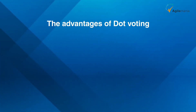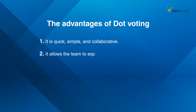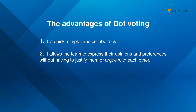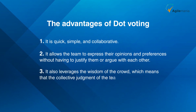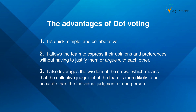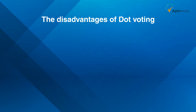The advantages of dot voting are that it is quick, simple, and collaborative. It allows the team to express their opinions and preferences without having to justify them or argue with each other. It also leverages the wisdom of the crowd, which means that the collective judgment of the team is more likely to be accurate than the individual judgment of one person.